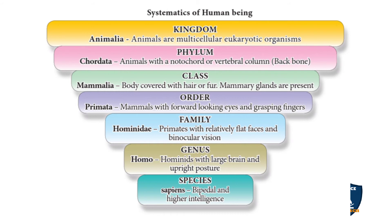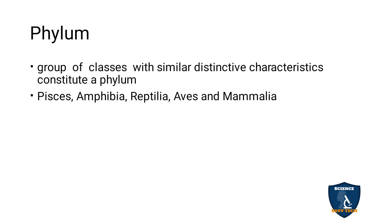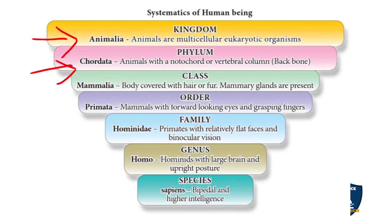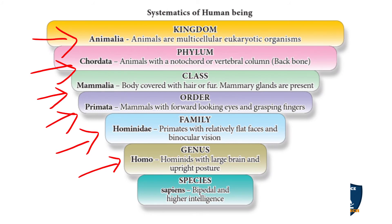Here is the systematics of human beings through the full taxonomic hierarchy: Kingdom — Animalia; Phylum — Chordata; Class — Mammalia; Order — Primata; Family — Hominidae; Genus — Homo; Species — Sapiens.